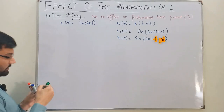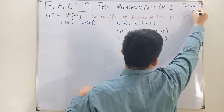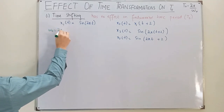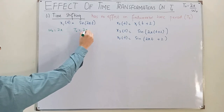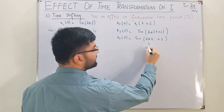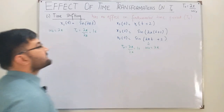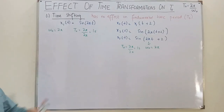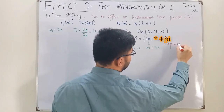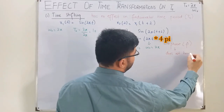To find the fundamental period, T₀ = 2π / ω₀. For x1(t), ω₀ = 2π, so T₀ = 2π / 2π = 1 second. For x2(t), ω₀ is again 2π, so T₀ = 1 second again. Time shifting has no effect on the fundamental time period. The value 2 inside is just a phase shift.